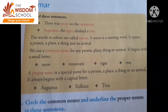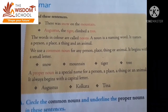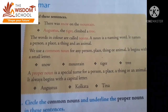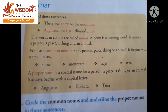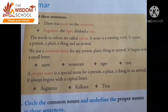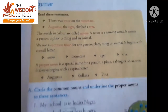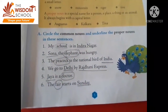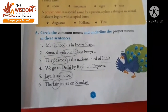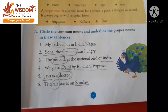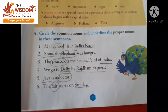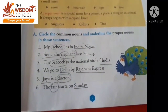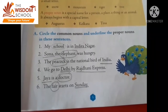Beta, commonly kisi bhi cheez ka jo name hoga — like chair, table — yeh sab common hain. But when we are talking about a special chair, like white chair, grey chair, that is called proper noun. Now we will do one exercise. Circle the common nouns and underline the proper nouns. Jo circle karna hai, wo common noun hai. Aur jo underline hai, wo proper noun hai.